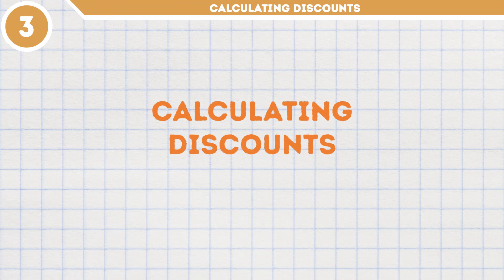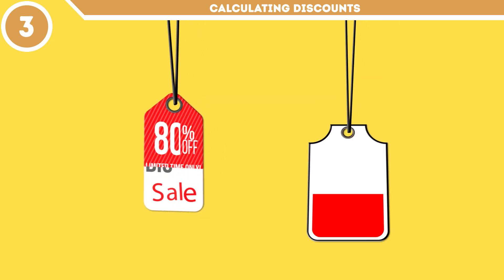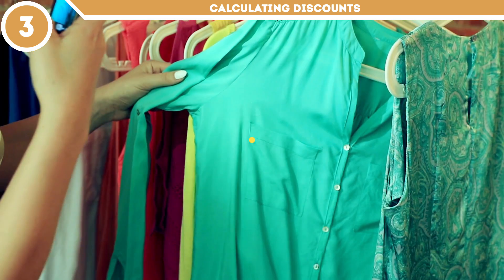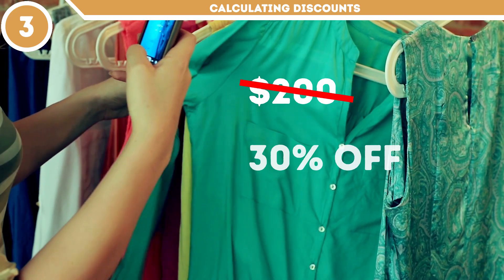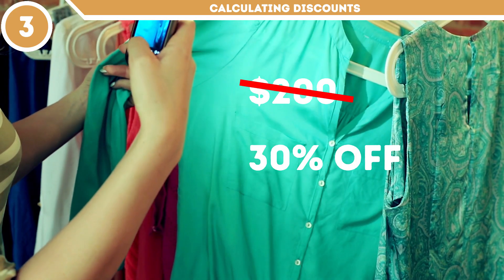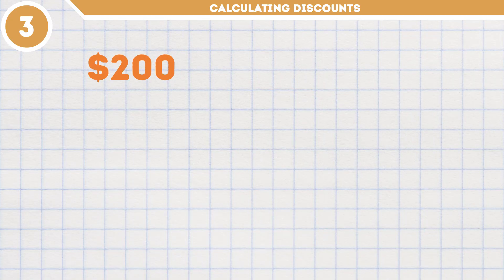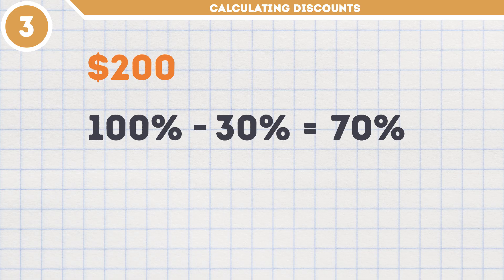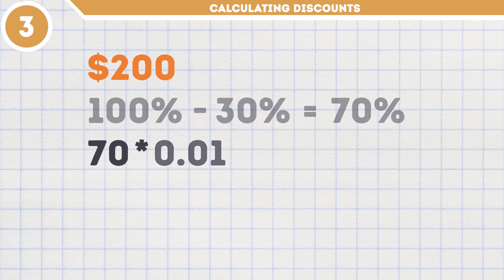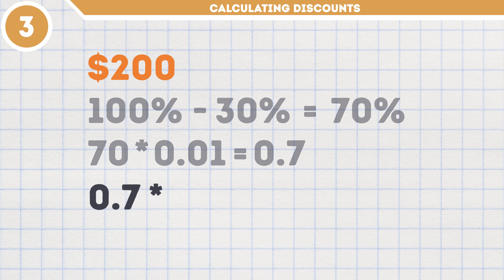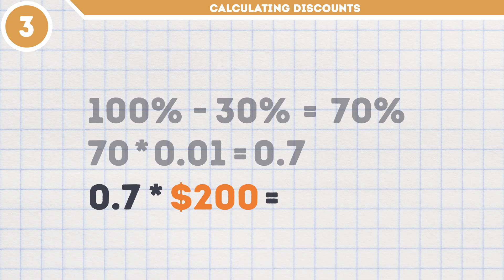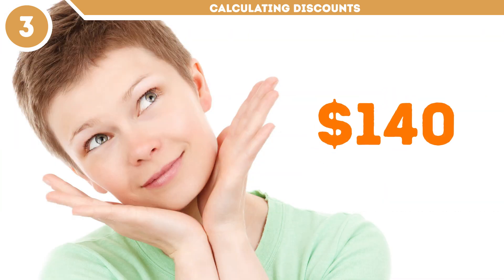Method number 3: Calculating discounts. Sales are the best, right? What if something with a hefty price tag of $200 catches your eye and it's on sale at 30% off? How much would you pay? The first step is to find the opposite of the discounted percent — take 100% minus 30% to get 70%. Then multiply 70 by 0.01, which is 0.7. Take that 0.7 times the initial price of $200. That means the new price is $140 — that's a pretty good deal.